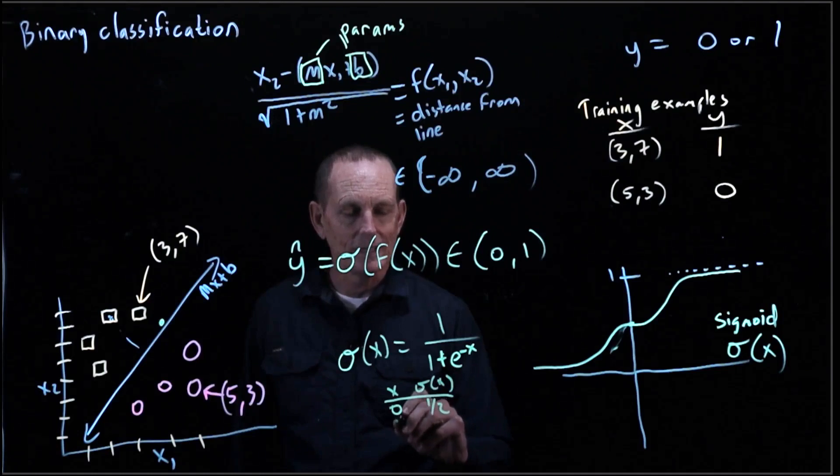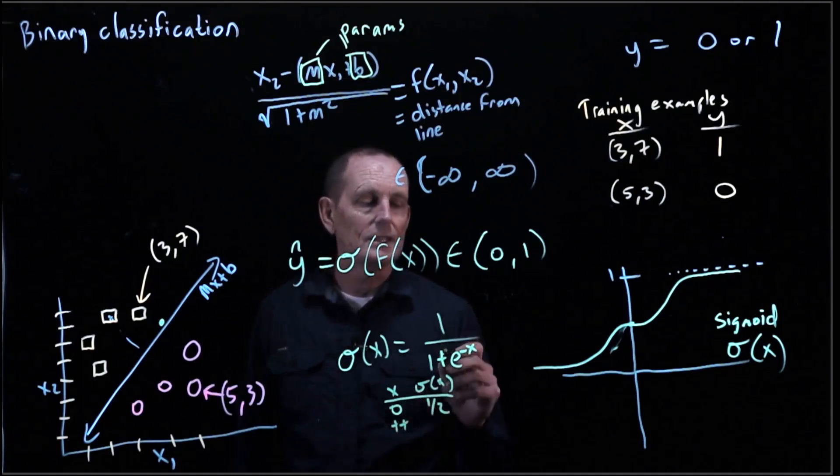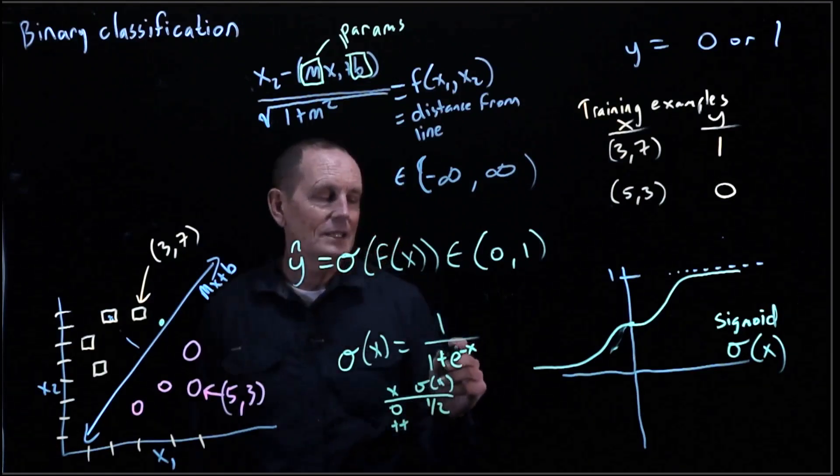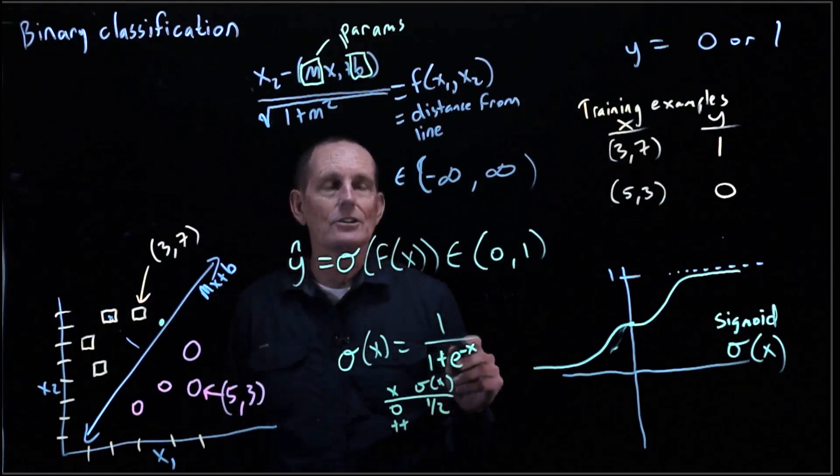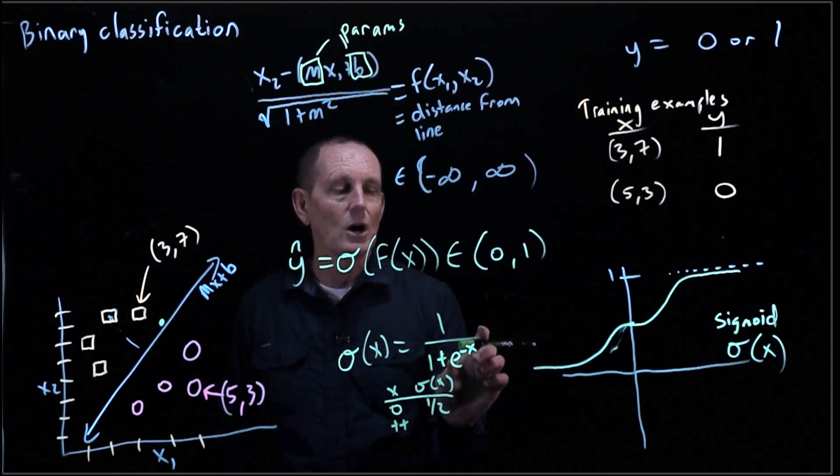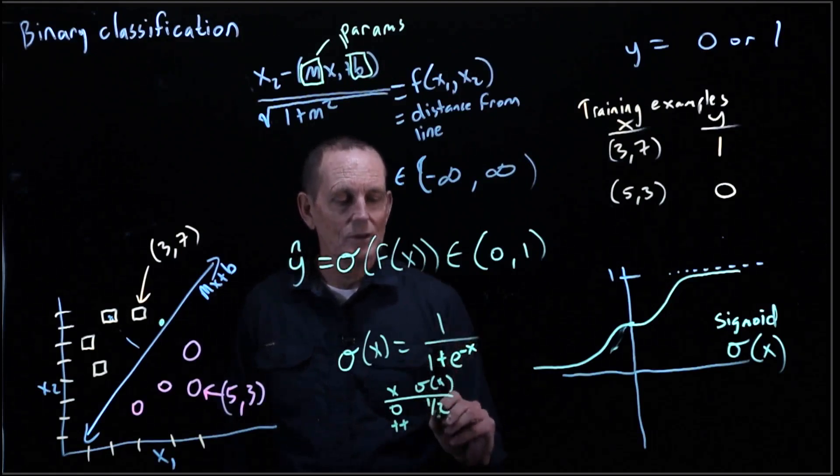If x is, let's say, large, then this is 1 over 1 plus e to a negative large number. So this becomes very small. And so this becomes 1.